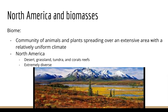North America and biomes. This is the physical part of geography. A biome is a community of animals and plants spreading over an extensive area with a relatively uniform climate. In North America, it is extremely diverse, with deserts, grassland, tundra, and coral reefs.